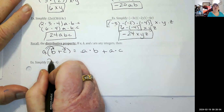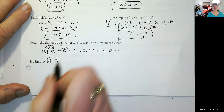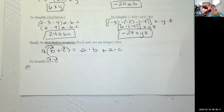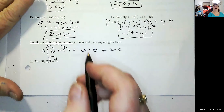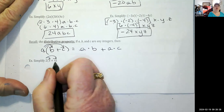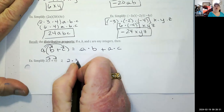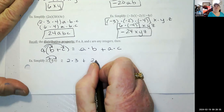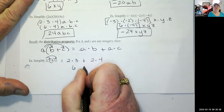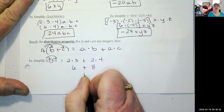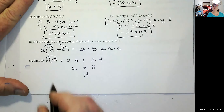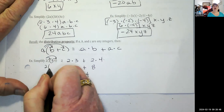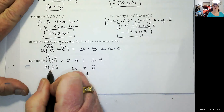Let's apply it: two times the quantity three plus four. We do two times three and two times four. Two times three is six, plus two times four is eight. Six plus eight is 14. If we would have done it the other way — parentheses first — two times seven is also 14. Both methods agree.